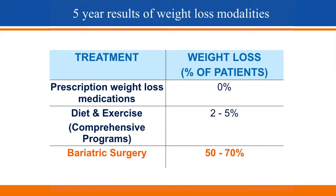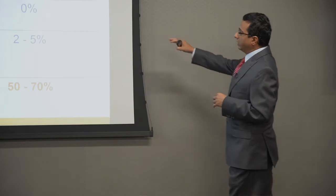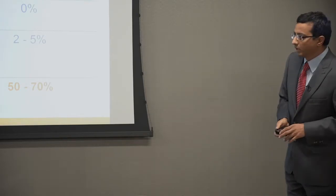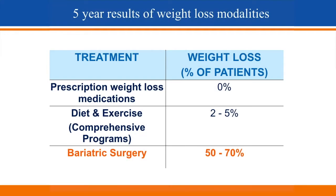Looking at five-year results from all these different modalities: it is difficult to lose weight, but the hardest part — where most people struggle — is keeping it off, whether with diet, exercise, or medication. Results have shown that with prescription medication for weight loss, almost zero percent of patients will keep it off at five years. Diet and exercise is actually better — two to five percent of people will lose weight and keep it off beyond five years. Bariatric surgery, however, gives you a long-lasting result: fifty to seventy percent of people are going to lose weight and keep it off over a five-year period — a huge change compared to diet, exercise, or medication.